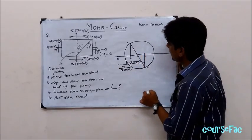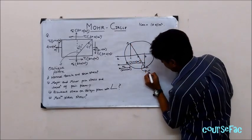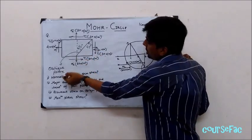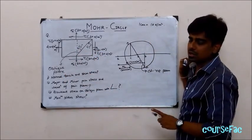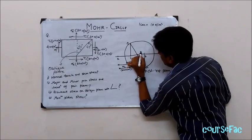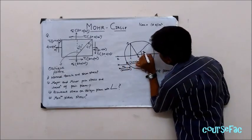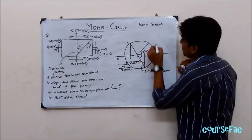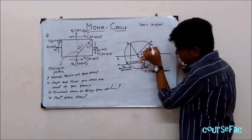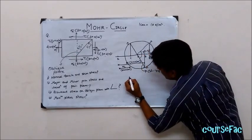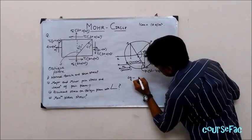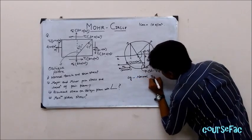This is our circle. The line DE is our reference plane. It is mentioned that the oblique plane angle is 45 degrees. We always draw twice the given angle from the reference plane, so we take 2 theta equal to 90 degrees. Let this point be F. We project OF onto the horizontal axis, letting this point be G.